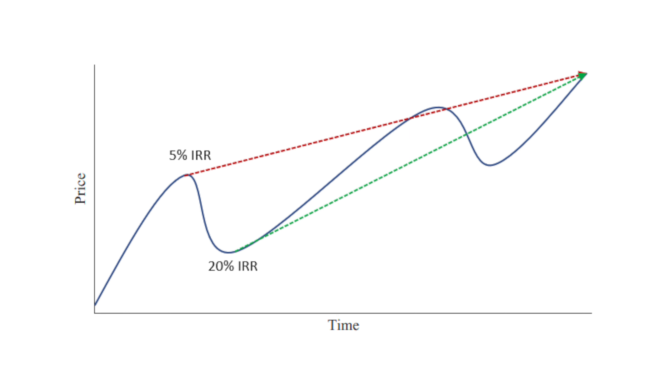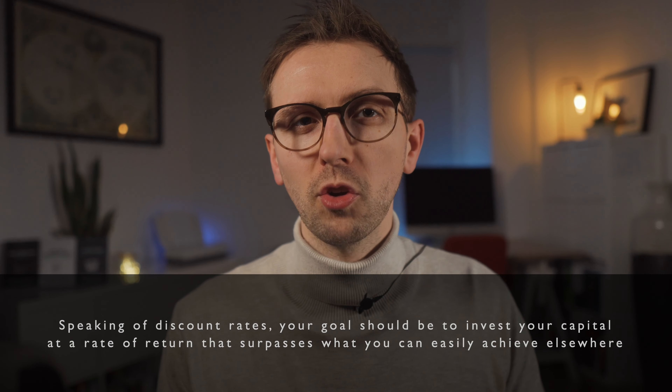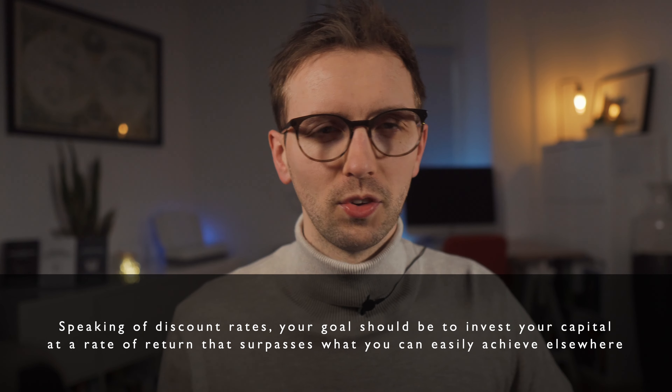I actually came across a chart on Twitter the other day which illustrates this idea. An investor should love volatility because sharp price drops offer opportunities, and lower entry prices increase upside and reduce downside risk. So my point is that as an investor, your goal should be to invest your capital at a rate of return that basically surpasses a return that you can easily achieve elsewhere, such as in a broad market index fund. As the stock market has historically returned around 10% per year including dividends, I recommend using around 10% as a discount rate.